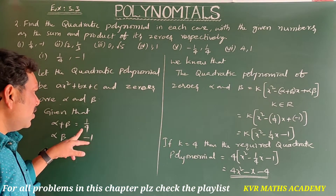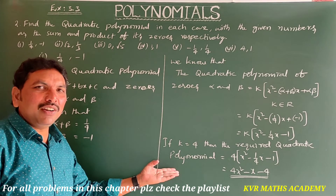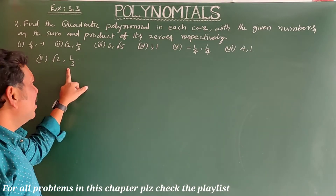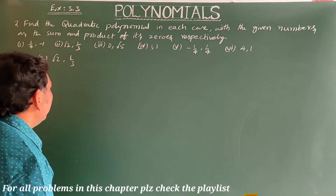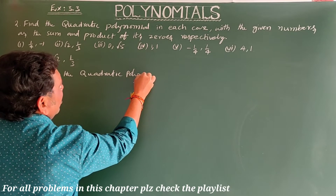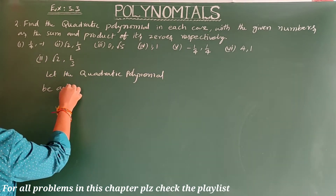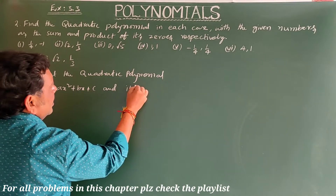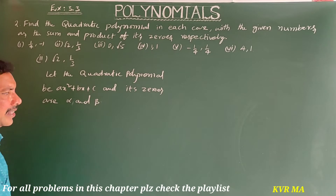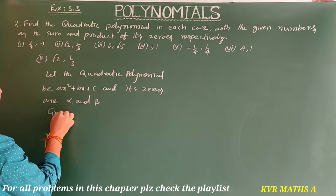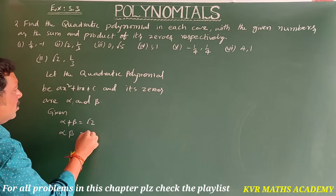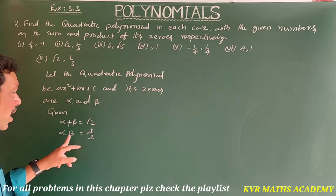Second case: sum=√2, product=1/3. Let the quadratic polynomial be ax²+bx+c with zeros α and β. Given α+β = √2 and αβ = 1/3.